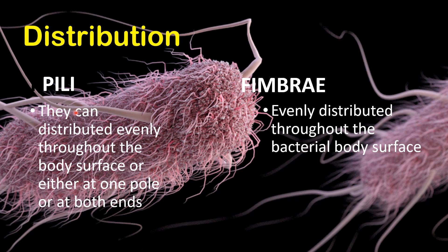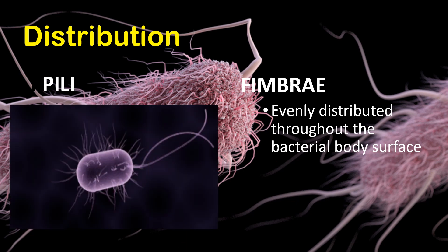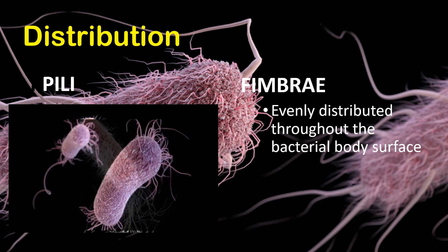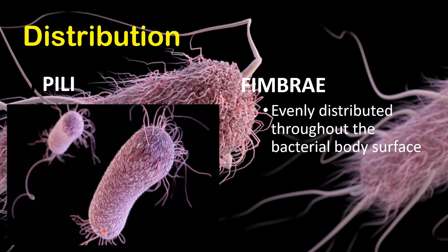Regarding distribution, pili can be distributed evenly throughout the body surface, or either at one end or both ends, whereas fimbriae are distributed throughout the bacterial body surface. You can see in this image the pili are distributed throughout the body surface, and in this picture the pili are concentrated at one end of the bacterial cell, while in this other cell the pili are concentrated on both ends.